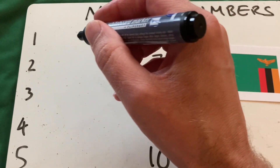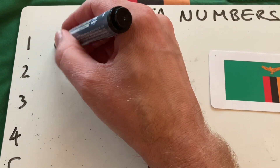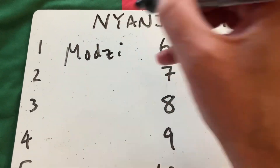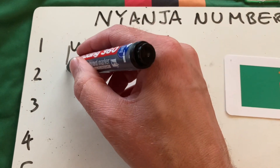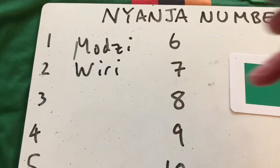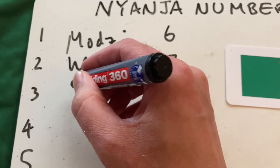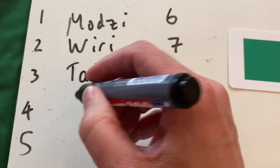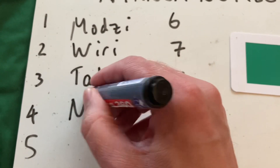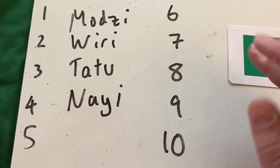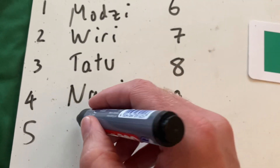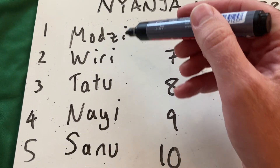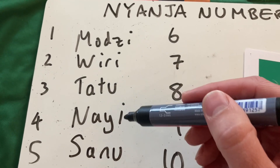What's number one in Nyanja? Mozi. And number two? Wiri. Number three? Tātu. Number four? Nai. Number five? Sānu. So there we go, one to five: Mozi, wiri, tātu, nai, sānu.